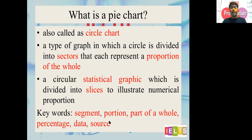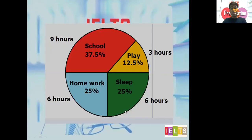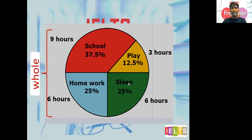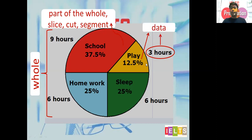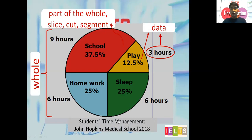All these keywords you would come across as you study pie charts. I'm showing you now an example of a pie chart. This whole thing is called the whole — just refer to this as whole. Each of these parts — the red part, yellow part, green part, the blue part — is called the part of the whole, or slice, cut, or segment. The numbers you see — 3 hours, 6 hours, 9 hours, 12.5%, 37.5%, 25%, 25% — along with labels like school, play, sleep, homework, these are called your data. When you see a group of words below it, like students, time management, John Hopkins Medical School 2018, that is called your source — or where the information is from.